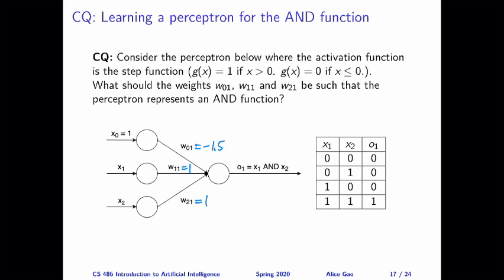We have a perceptron and the activation function is the step function. The question is asking you, what should the three weights be such that the perceptron represents an AND function? In the main lecture video, I told you the answer that I came up with. It's minus 1.5, 1, and 1. And there are also other possible answers. Now let me show you how I derived these answers.